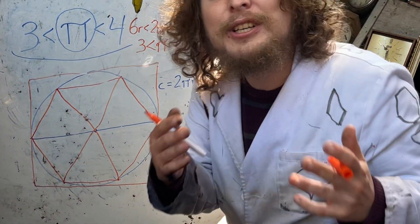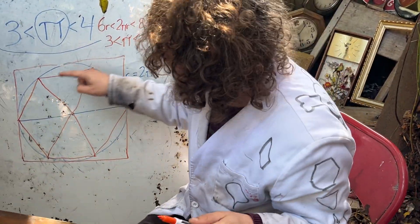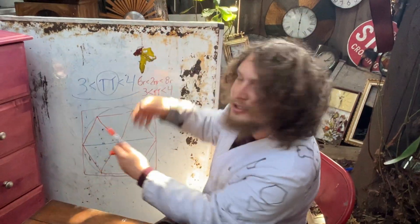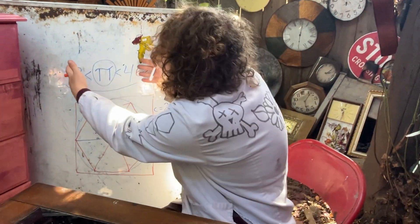And ancient mathematicians would inscribe shapes with many sides inside the circle, as well as outer ones the circle was inscribed in, and look at these bounds.